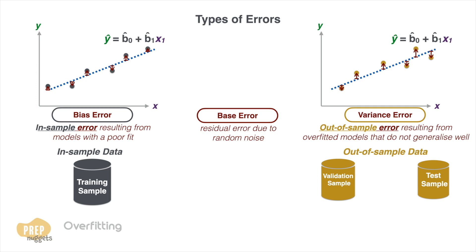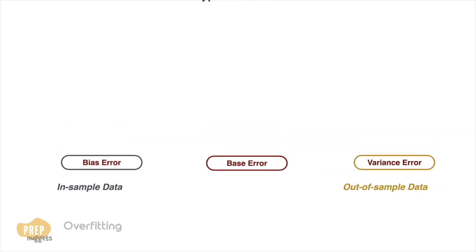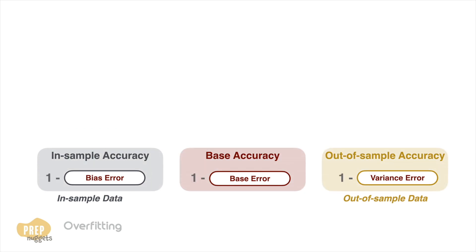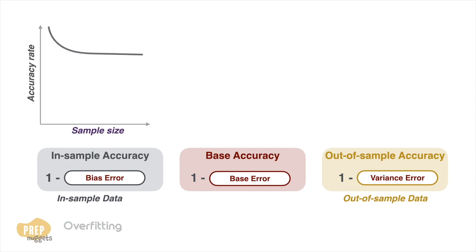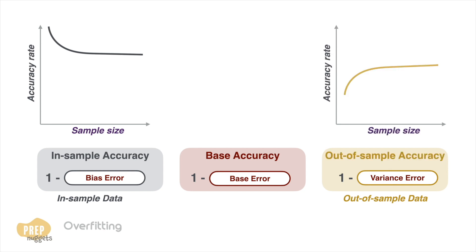One way to understand the types of errors is to study the accuracy rate. The accuracy rate is 1 minus the error rate. If we plot the in-sample accuracy rate against the sample size used in training, we would expect a downward sloping curve, because the more samples there are, the harder it gets to fit all the samples in a model that fits well. Conversely, the out-of-sample accuracy rate should be an upward sloping curve — as the number of samples increases, the accuracy converges to the true accuracy of the model.